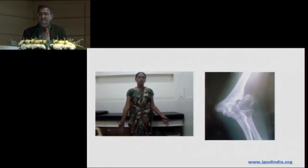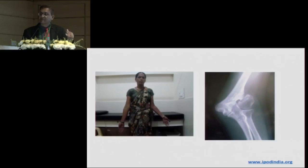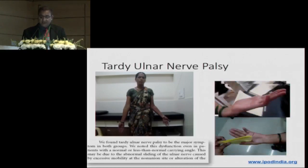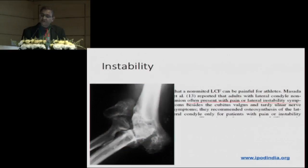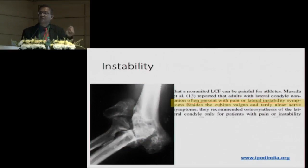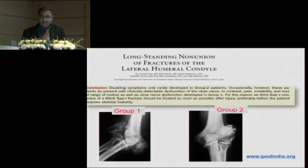This is a 42-year-old lady who had a lateral condyle fracture at age six, carried on for years, and presented not because of symptoms at the elbow, but because of symptoms at the hand — tingling, numbness, and clawing. We had to address the instability, the deformity, and the tardy ulnar nerve palsy.